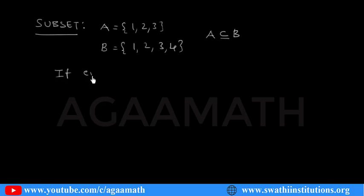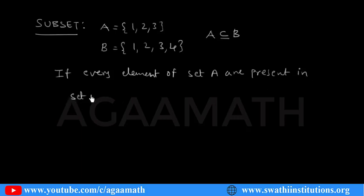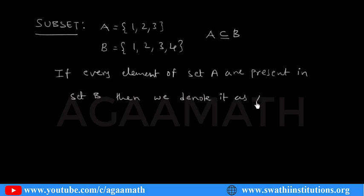If every element of set A is present in set B, then we denote it as A subset of B. This is the notation — A subset of B. Remember one thing: the first set A is a subset of B.